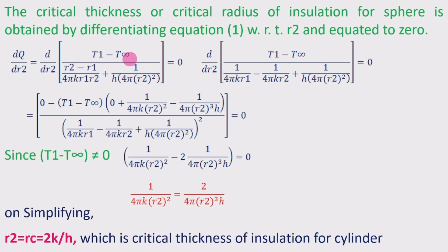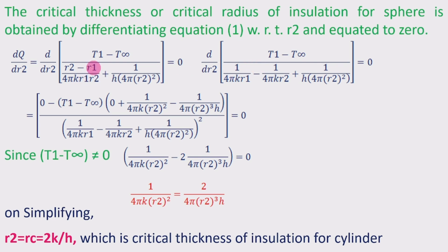So dq/dR2 equals d/dR2 of [T1 − T∞] / [(R2 − R1)/(4π K R1 R2) + 1/(H × 4π R2²)], and this is equated to zero. Differentiating, d/dR2 is applied: the denominator contains two terms which can be separated. After cancellation, the terms simplify to 1/(4π K R1) minus 1/(4π K R2) in the conduction part, plus the convective resistance 1/(H × 4π R2²).